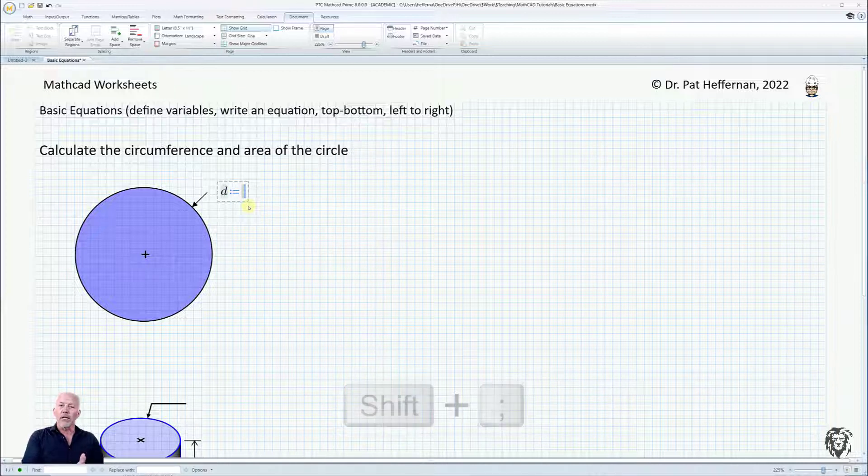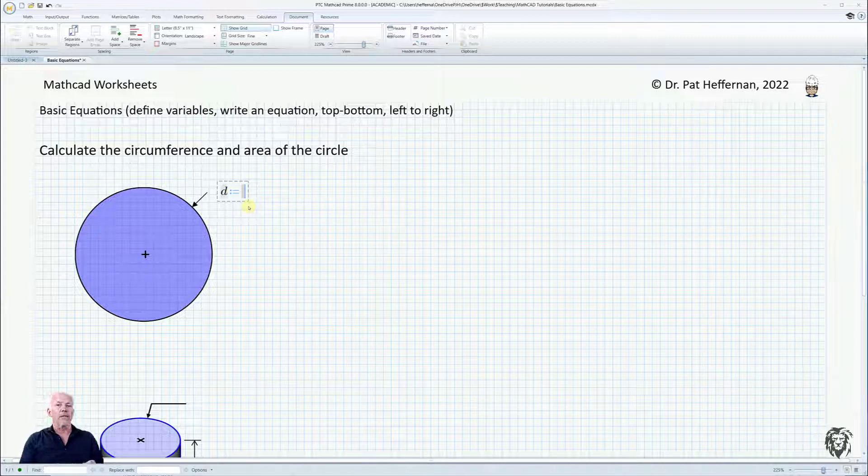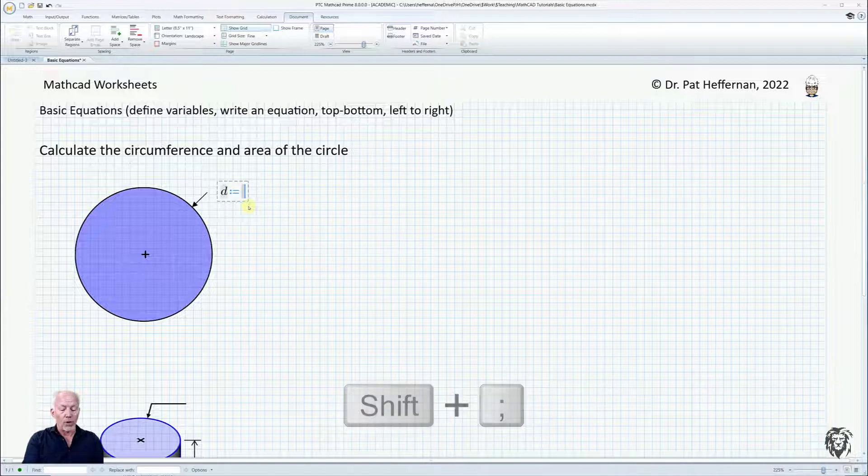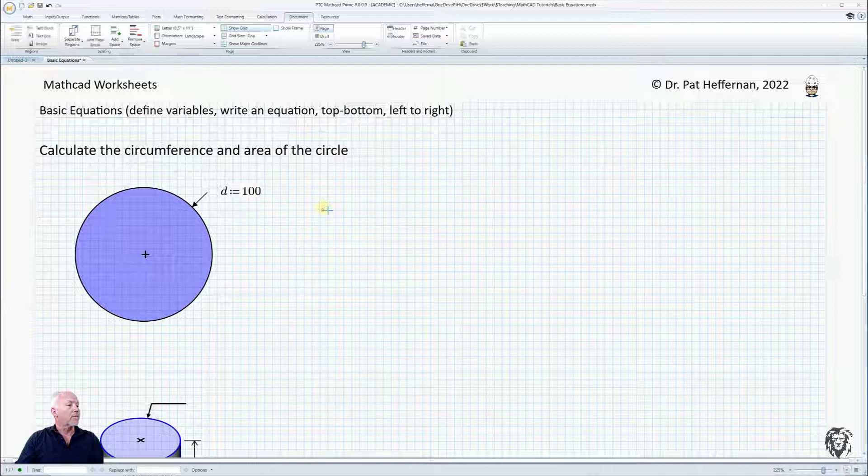It looks like an equal sign, but it's got a colon left of it, which means it's not asking to calculate what D is equal to, but rather defining what D is equal to. We get that by putting in the colon, basically shift semicolon. Now I can give it a diameter, so we've defined the diameter as 100.